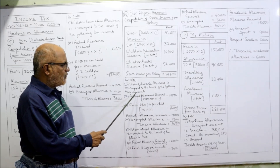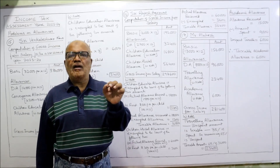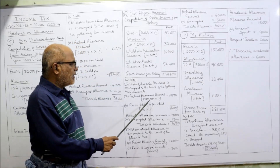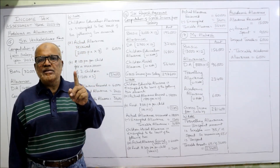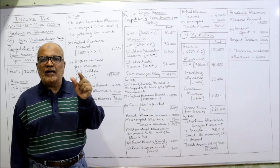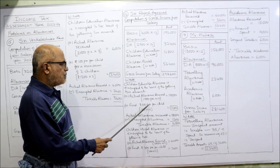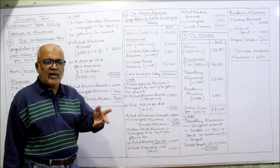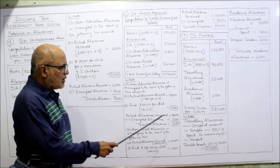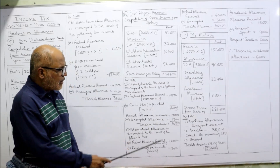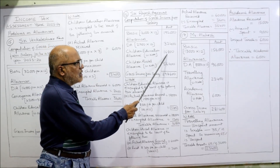Children education allowance is exempted to the least of the following two amounts. Actual allowance received: 1,500 per month into 12 equals 18,000. The exemption ceiling is 100 per month, meaning 1,200 per annum for one child — and he got it for one child only. So 100 into 12 equals 1,200. Whichever is least: 18,000 or 1,200 — 1,200 is exempted. Actual amount received 18,000 minus exempted 1,200 leaves 16,800 as taxable children education allowance.